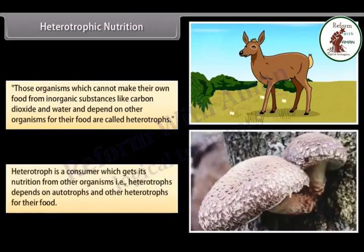A heterotroph is a consumer which gets its nutrition from other organisms. That is, heterotrophs depend on autotrophs and other heterotrophs for their food.